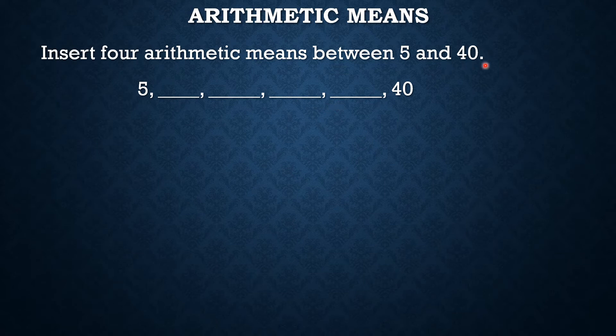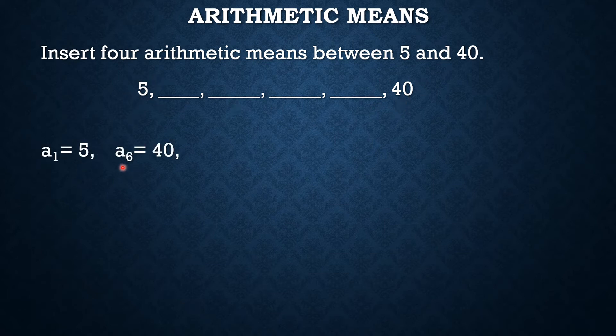And the last term is 40. So in this case, we can see that there are 6 terms in all. And here we can also identify that a sub 1 is 5 and a sub 6 or the last term is 40.